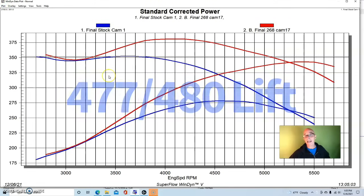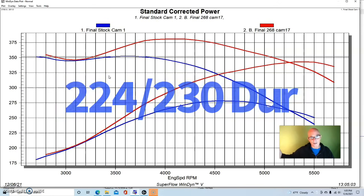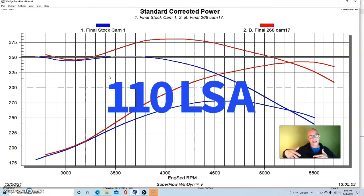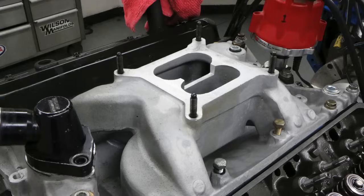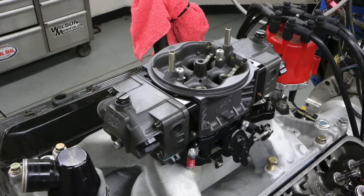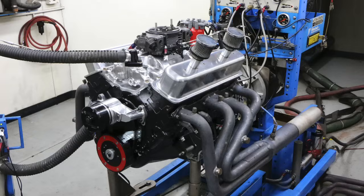specs up here. We retained our long tube headers, our distributor, and our dual plane Speedmaster Eliminator intake manifold with the Holley 650 carburetor. All we did basically was change the camshaft. In this case we obviously had to